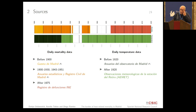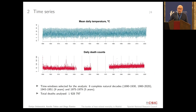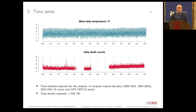The daily temperatures are coming from the meteorological agency in Spain from 1920 onwards, and prior to 1920 we have been typing the data. This is the time series of daily mortality and daily temperature in Madrid. If you focus over there, you can see the effect of the Russian pandemic in 1890 and the effect of the flu pandemic and other events through time.